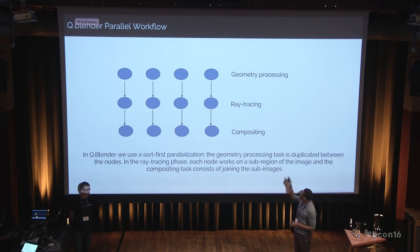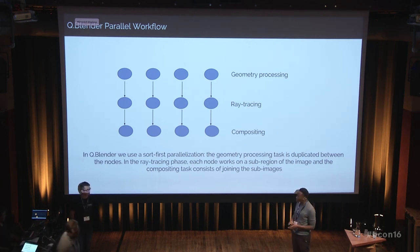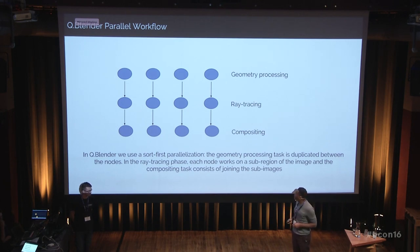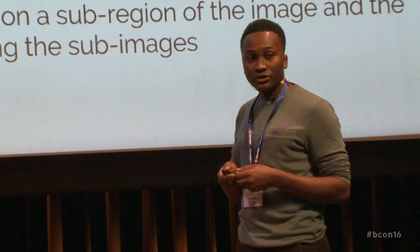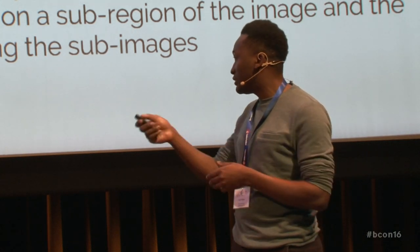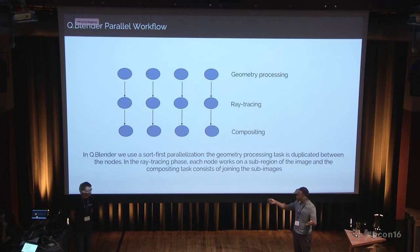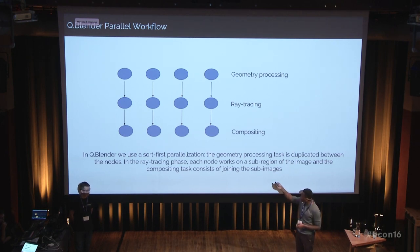In sort-first parallelization, the geometry processing task is the same for all different sub-stacks in the workflow. When you start the ray tracing stage, each different process just has to work on the sub-part of the image assigned to it. At the end, the compositing task is easy because you just have different sub-images to join. We chose this solution because we have a geo-distributed cloud, and from a communication viewpoint, if you make a lot of communication between nodes, the rendering process will not be efficient. So it was more interesting to have a compositing phase that is really easy. The trade-off is a duplicated task at the beginning, but you avoid expensive communication costs — which we cannot afford in a geo-distributed context.